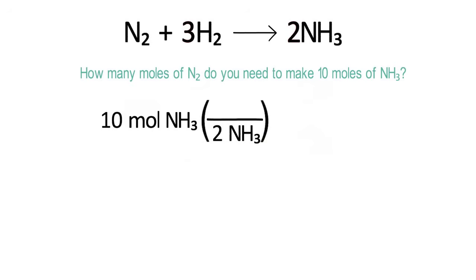2NH3 on the bottom. This 2NH3 comes directly from the balanced reaction. Because we are solving for nitrogen, we put 1N2 on the top. That 1N2 also comes from the balanced reaction. Remember, if no number is written in front of a chemical, that means the coefficient is 1.